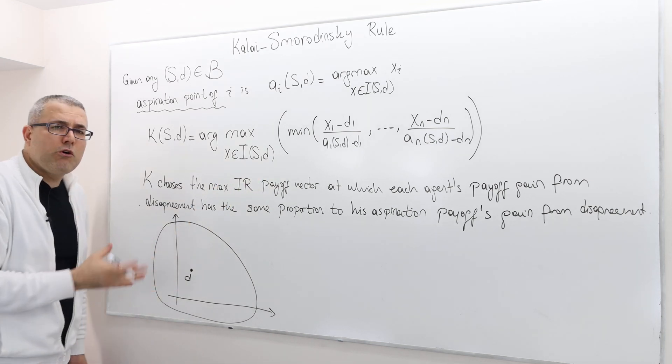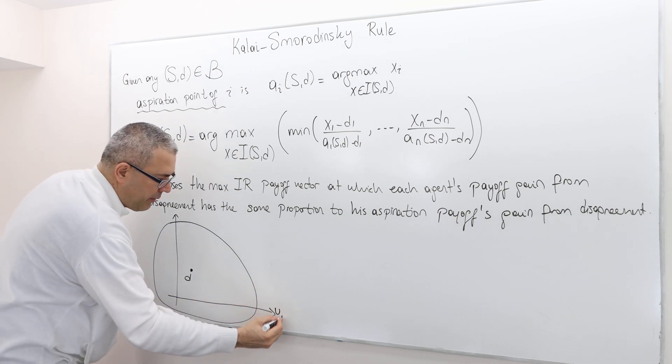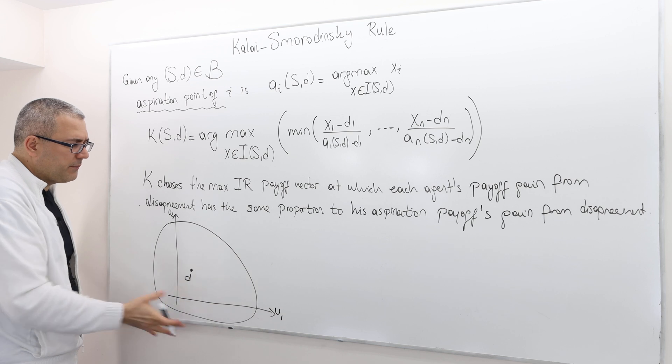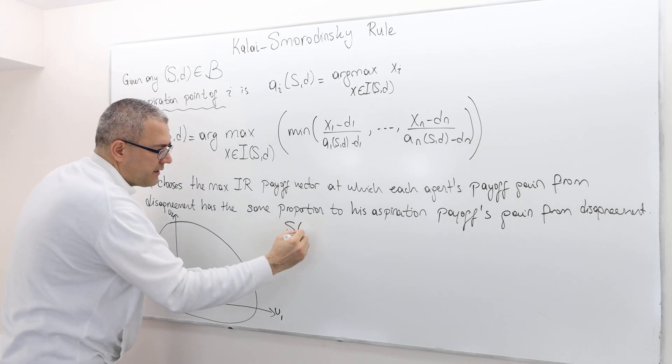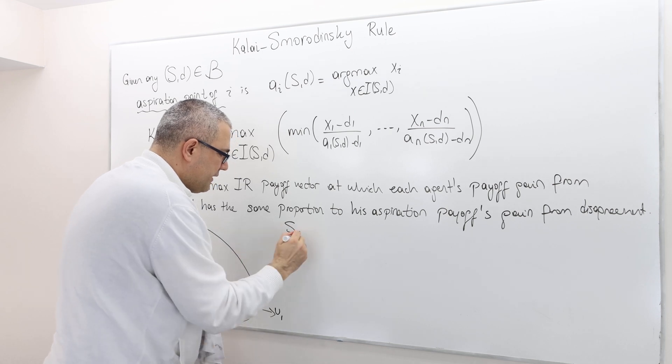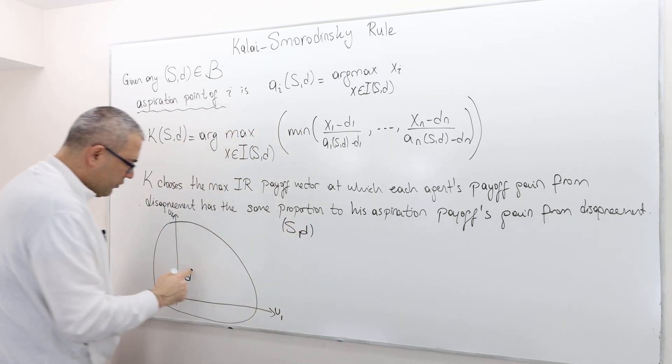Geometrically, what does it look like? Let's say this is the payoff of player one, payoff of player two. Suppose this is the set S. D is the disagreement point, which I assume is here.